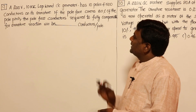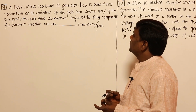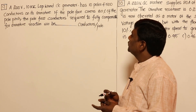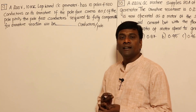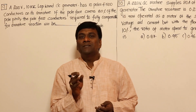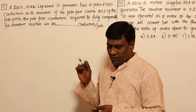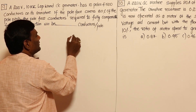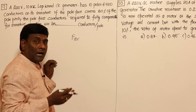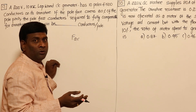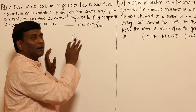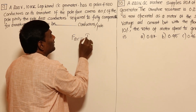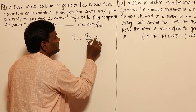Next problem (OG/PYQ): A 200 volts, 10 kilowatt lap-wound DC generator has 10 poles and 500 conductors on its armature. If the pole shoe covers 80% of the pole pitch, find the number of compensating conductors required per pole to fully compensate for armature reaction.